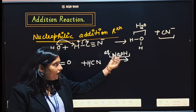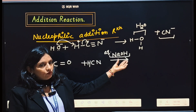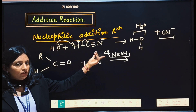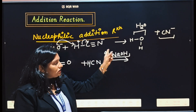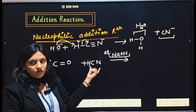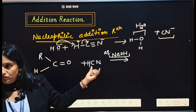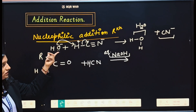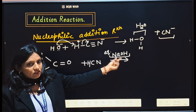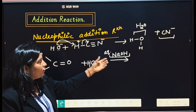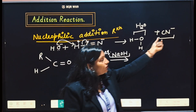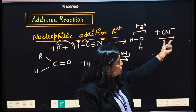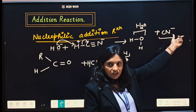So this reaction is proceeding in the presence of basic medium. Why? Because it helps to initiate the reaction and increases the rate. If we don't take basic medium, then the rate of reaction will be very slow. So for increasing the rate, we take basic medium. This basic medium helps us to identify the nucleophile very easily.